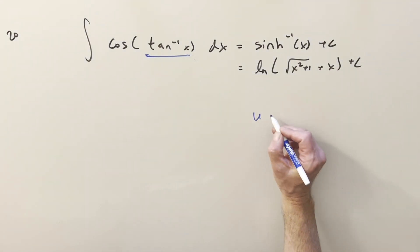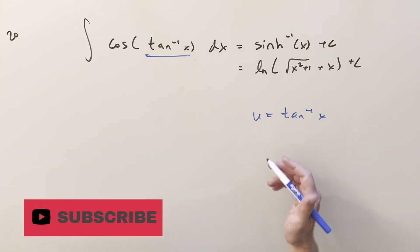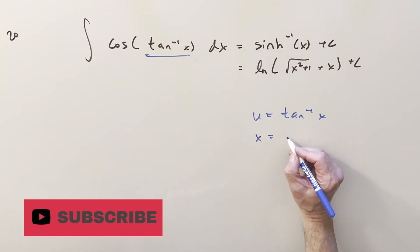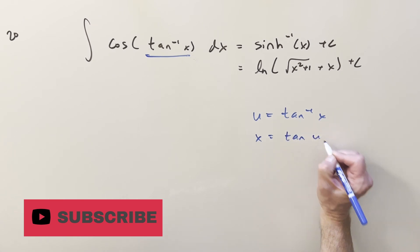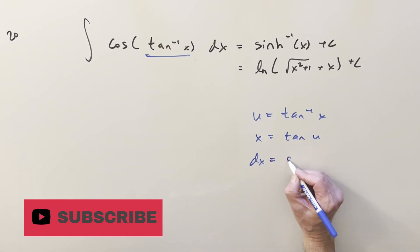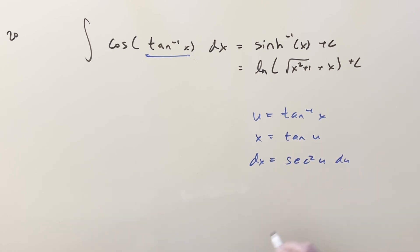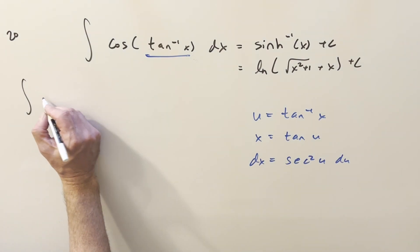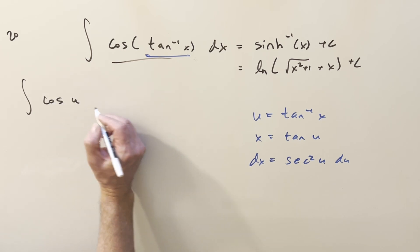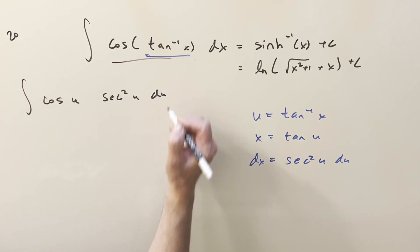Method 2 starts basically the same way. We do a substitution for arctan(x), setting it equal to u. Then solving for x by taking tan on both sides: x = tan(u). But now I'm going to do the full substitution and take a derivative, so for dx we get sec²(u) du. Substituting, the integrand becomes cosine(u) times sec²(u) du.